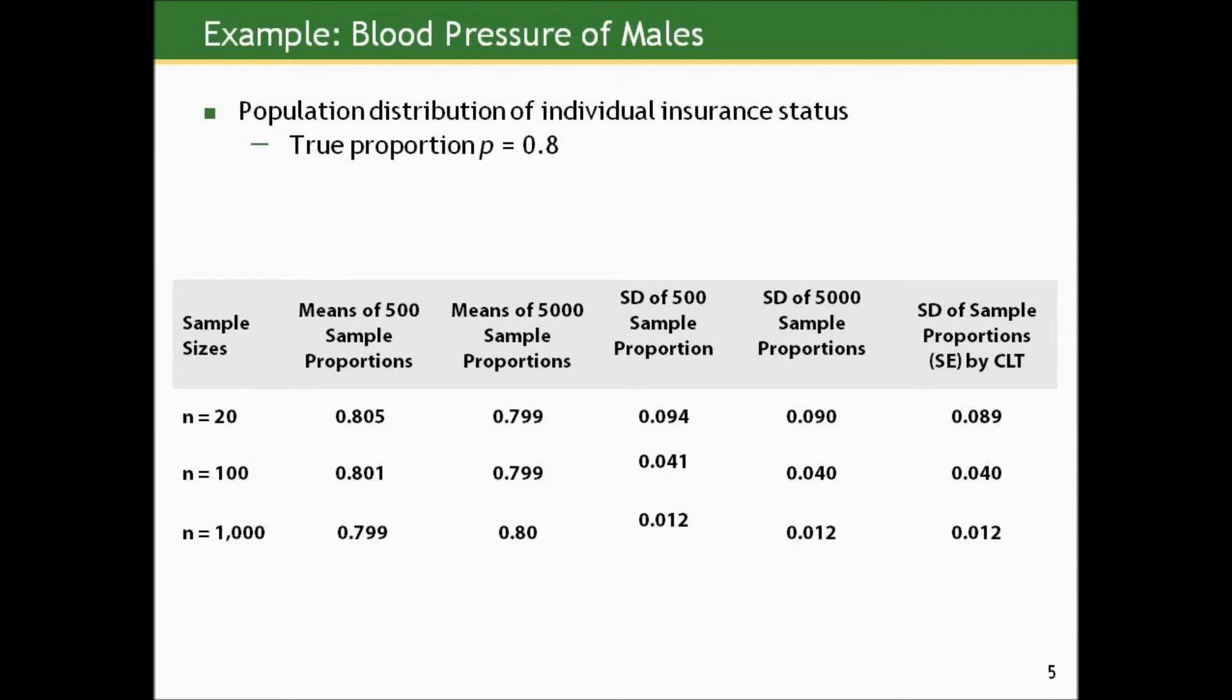So we call the population distribution of individuals' insurance status the true proportion with 80% or 0.8. And now I'm going to show you the results of what we just did, and then I also did an additional set of simulations where I took 5,000 random samples for each sample size consideration. You can see that these means all vacillate around the true proportion of 0.8 or 80%. And you can see that within each sample size choice, these standard deviations are similar whether we took 500 samples or 5,000. And additionally, they're similar to what would be predicted by the central limit theorem by employing that formula we just looked at.